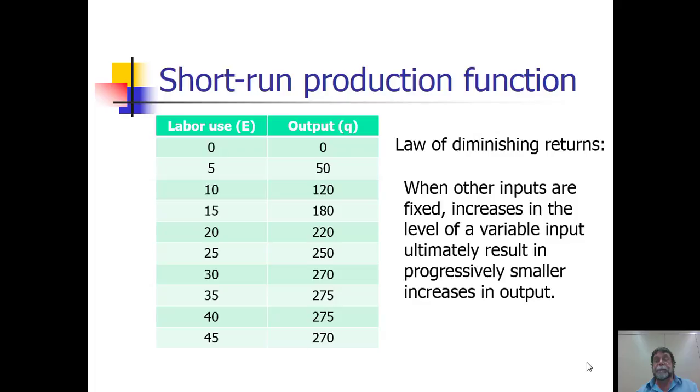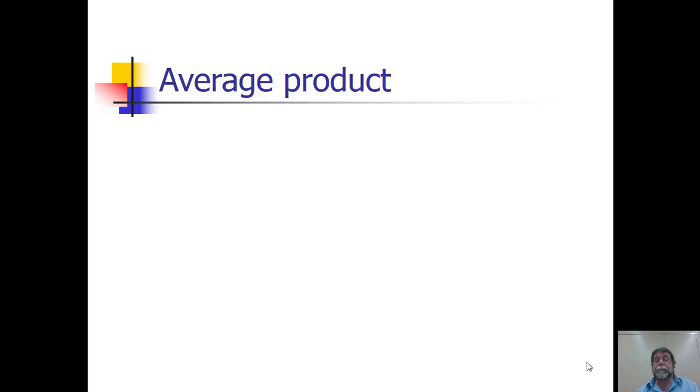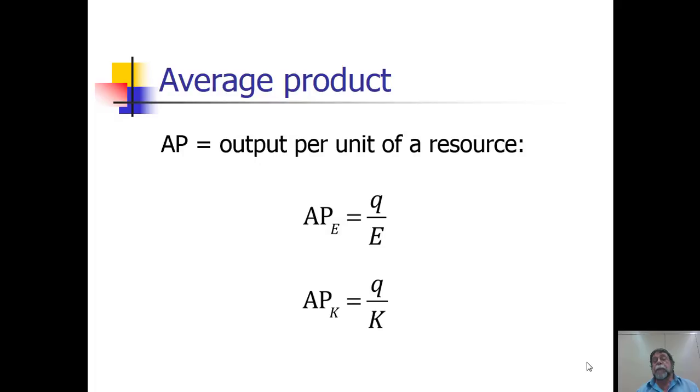A related concept that's going to be important is the concept of average product. Average product is defined to be the output per unit of a resource. For labor, it would be the average product of employee hours equals Q over E, output per worker, per hour of work. In general, you see average product mentioned quite a bit in the news when you hear reports about productivity. If you hear that productivity either rose or fell in a given quarter, what they're really talking about is the average product of labor.